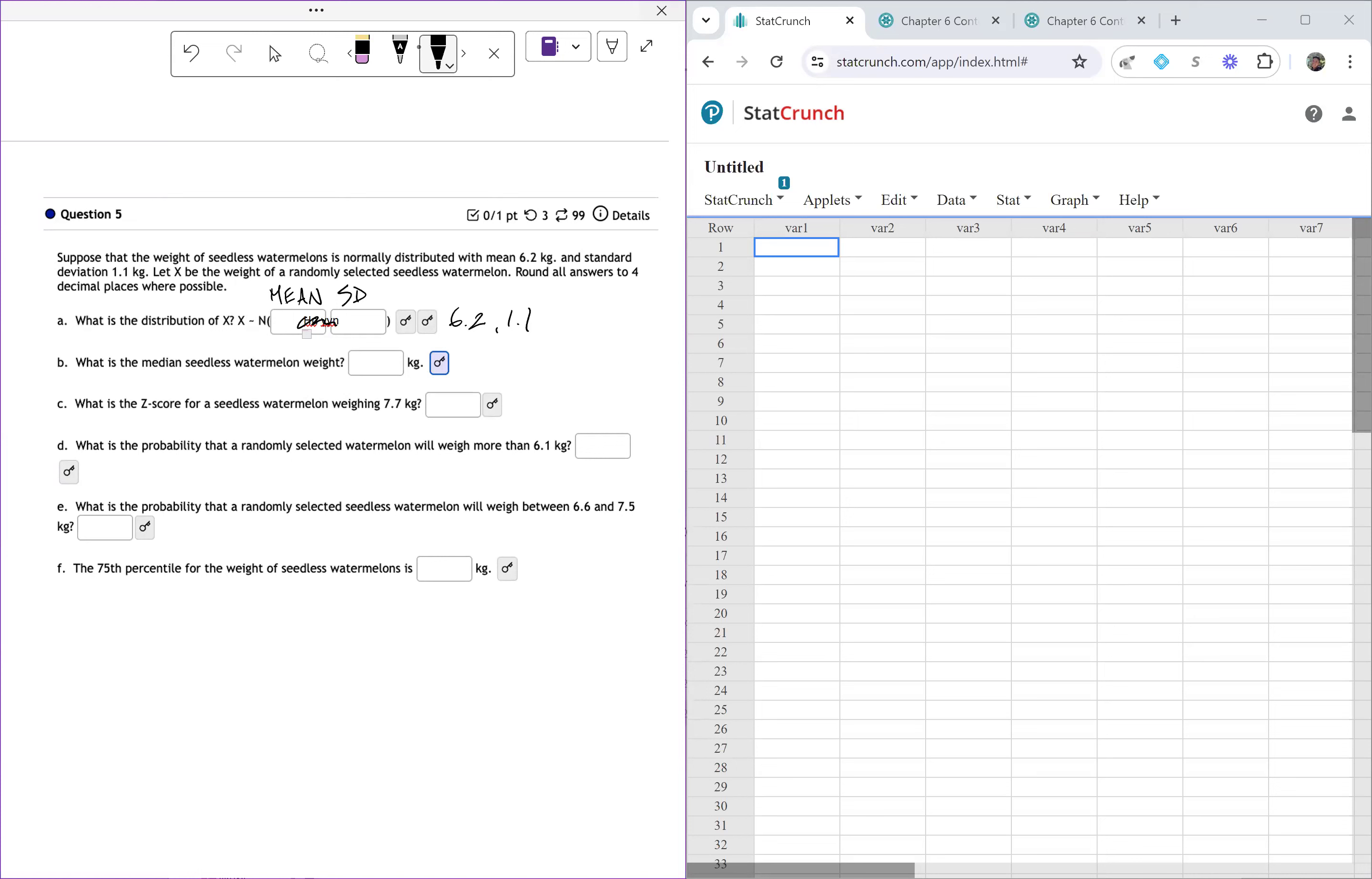Before we do the rest of it, I do want to sketch a quick normal distribution down here. That's not exactly balanced, but you know what I'm going for. So the cool thing about this is this is our mean, right? This is 6.2.